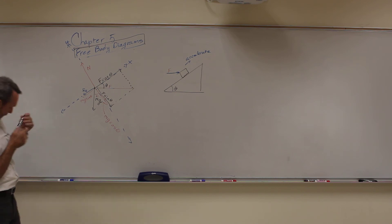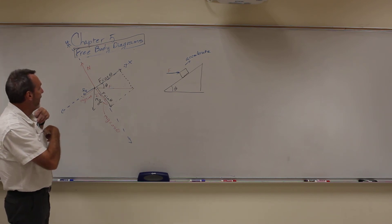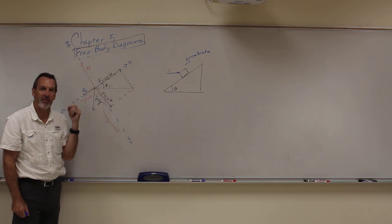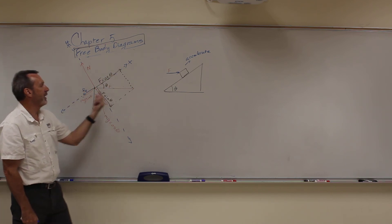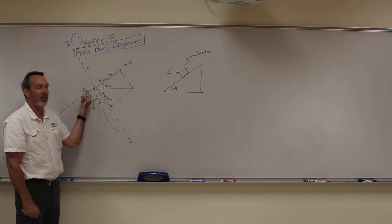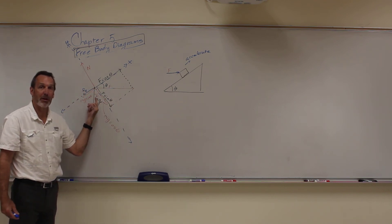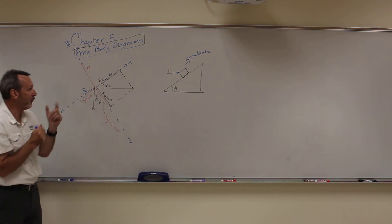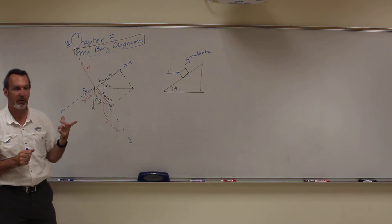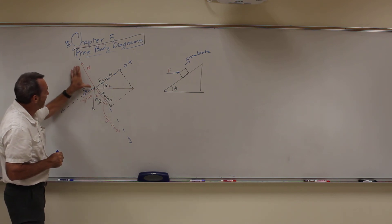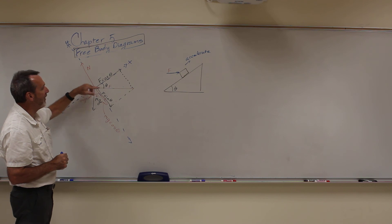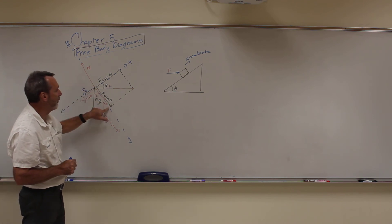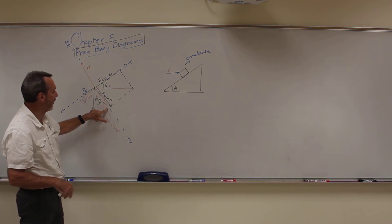So notice, now, for this to accelerate, f cosine theta has to be bigger than both of these added together. Gravity is trying to pull it down the incline. And friction is trying to pull it down the incline, or keep it from going up the incline. So this distance here has to be bigger than those two added together. That's why I had to extend my force. And notice the normal force is much, much bigger than the gravity, because as I'm pushing into it, I'm increasing the normal force. I have a component of my force that's increasing the force of the normal force.